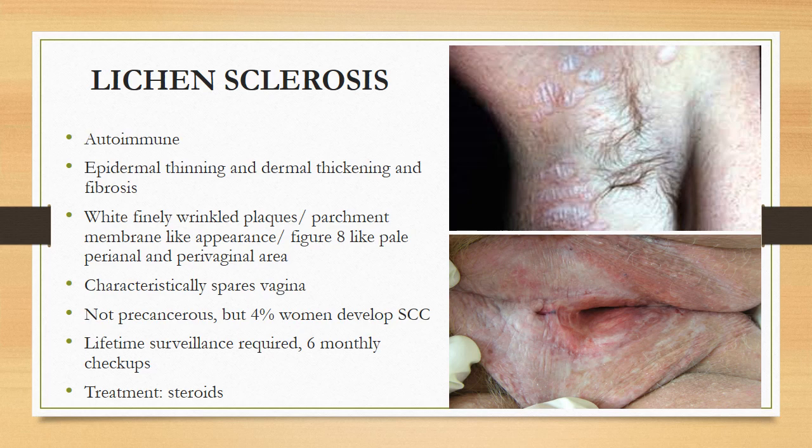Next is lichen sclerosis. Again, this is an autoimmune disease, but we need to be very careful in identifying it as it has a very peculiar appearance. It hits a particular age group, which is mostly post-menopausal females or the older age group. The appearance is whitish, finely wrinkled plaques — as you can see in the diagram — with a parchment membrane-like appearance.